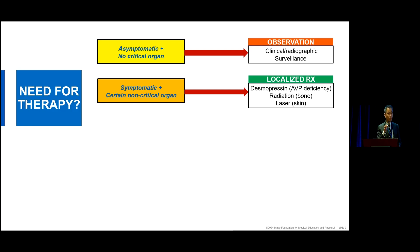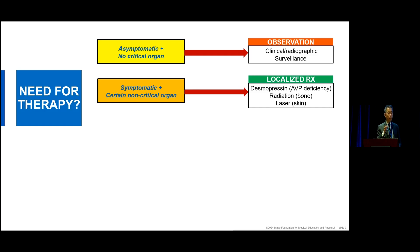The treatment also depends on the situation. If the involvement is the pituitary gland — where patients have diabetes insipidus, are very thirsty, unable to keep water in the body — this is due to AVP or desmopressin deficiency. If that's the only sign or symptom and there's no critical organ involvement, we can treat with AVP replacement, nasal or tablets. For painful bone-only disease, we may use radiation. For cutaneous lesions, rashes, or periorbital xanthomas around the eyes, dermatologists can be very helpful with laser surgery and so forth.